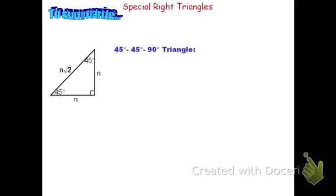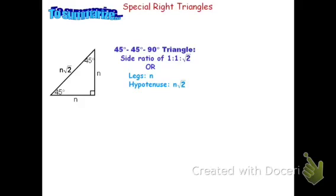It's isosceles because if you have the two equal base angles, you have the two equal sides — those are the legs. In a 45-45-90, the ratio goes 1, 1, root 2. Or, if the legs are both n, then the hypotenuse is n root 2. The hypotenuse is root 2 times the length of the legs.